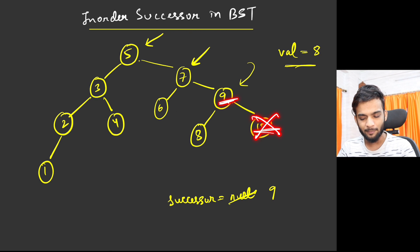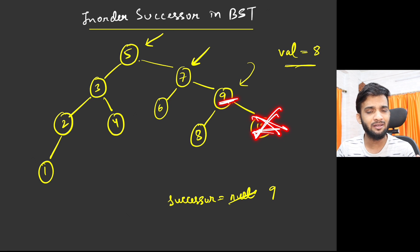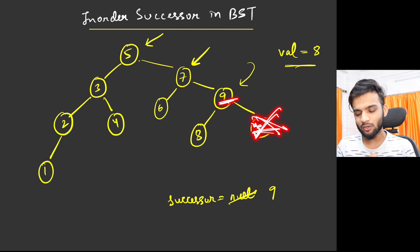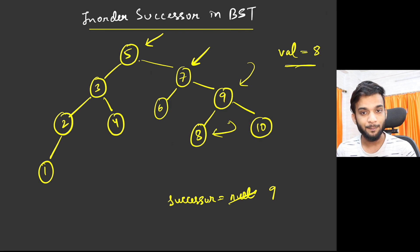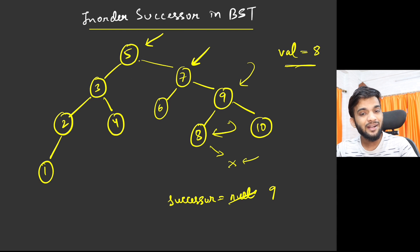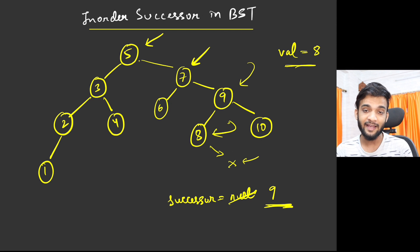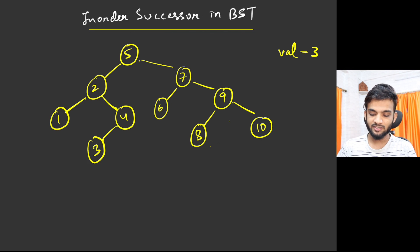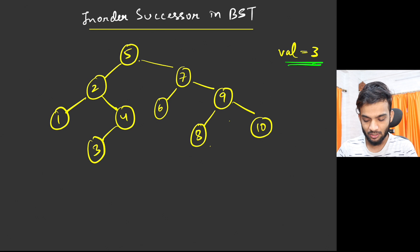We're not sure 9 is the immediate successor, so we check if there's something smaller than 9 but greater than 8 — we move left. On the left of 9 we find 8, which is not greater than 8, so we move right again. We reach null, so we stop. The successor stored is 9, and that is our answer.